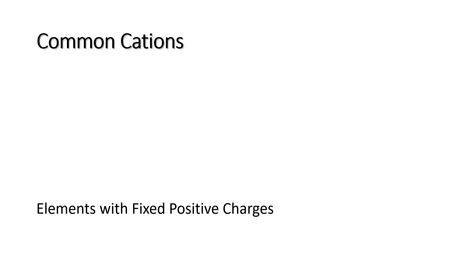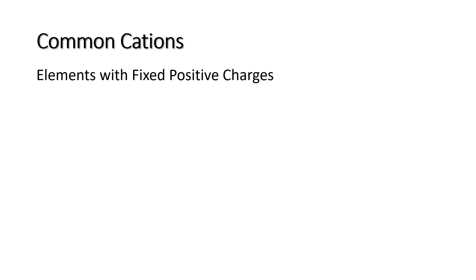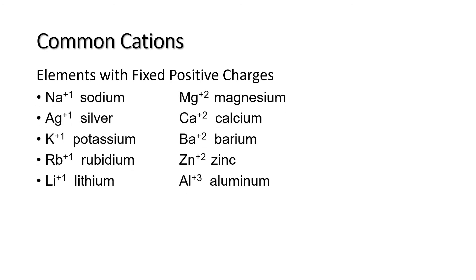I'll give you now the list of common cations — these are elements with fixed positive charges. For potassium, it has a plus 1 charge, meaning potassium can give up to 1 electron. For barium, it has a positive 2 charge, meaning it can give up 2 electrons. And for aluminum, it has a charge of plus 3, meaning aluminum can give up to 3 electrons.